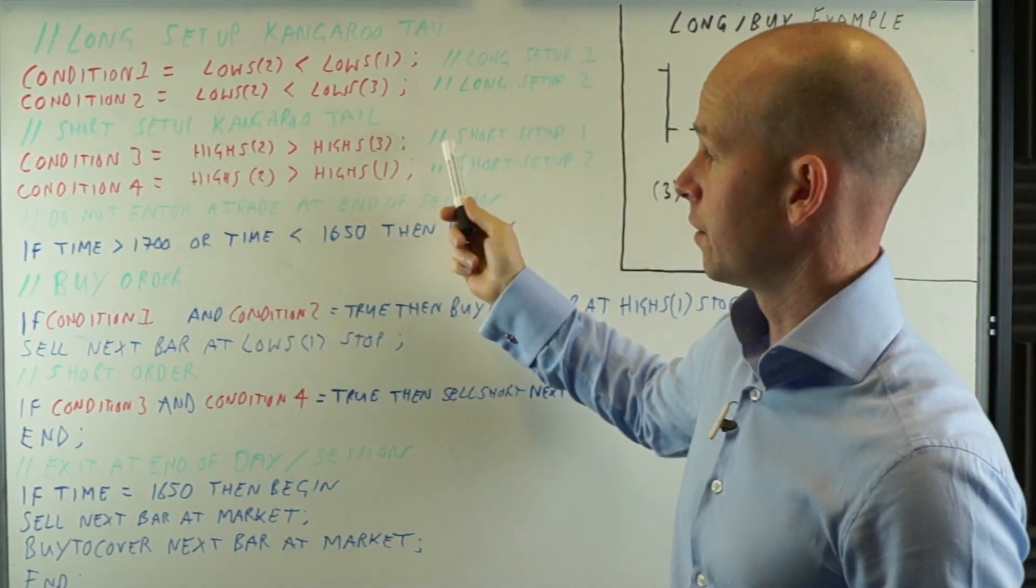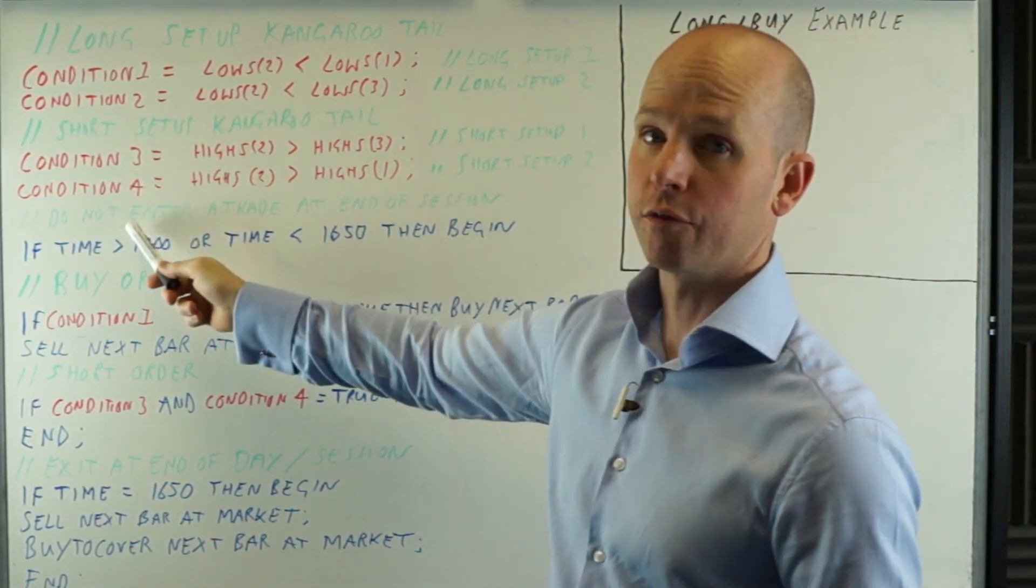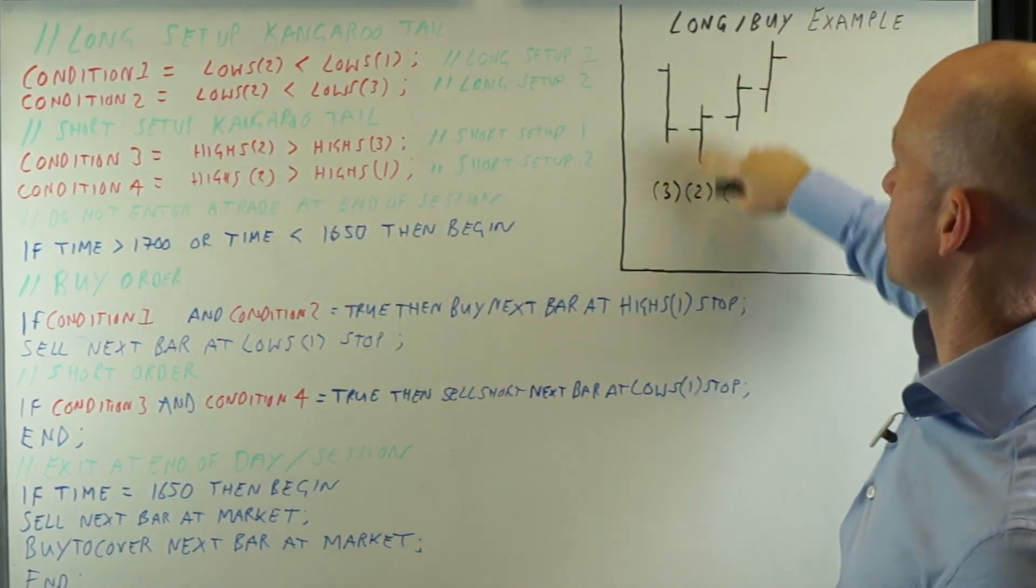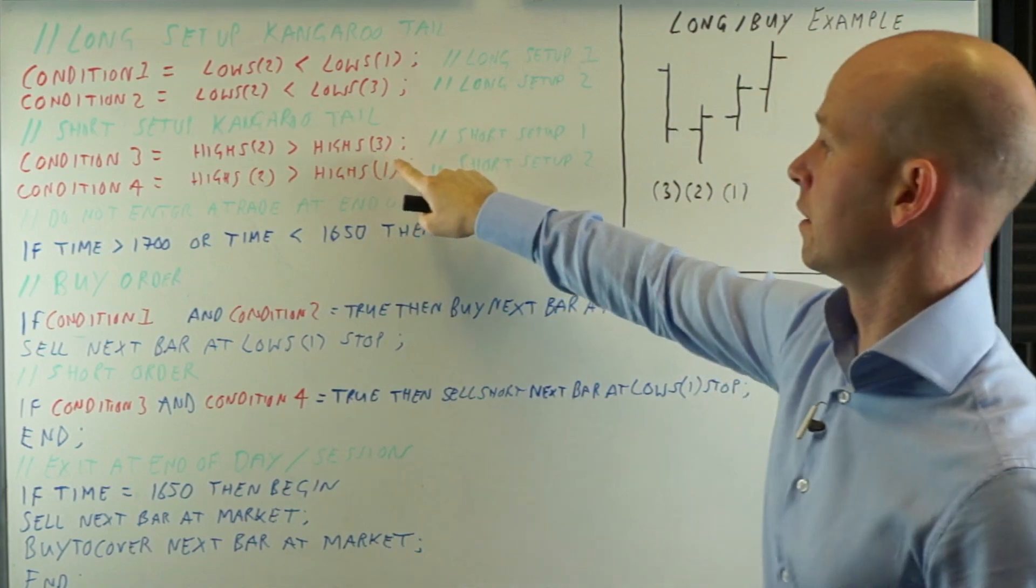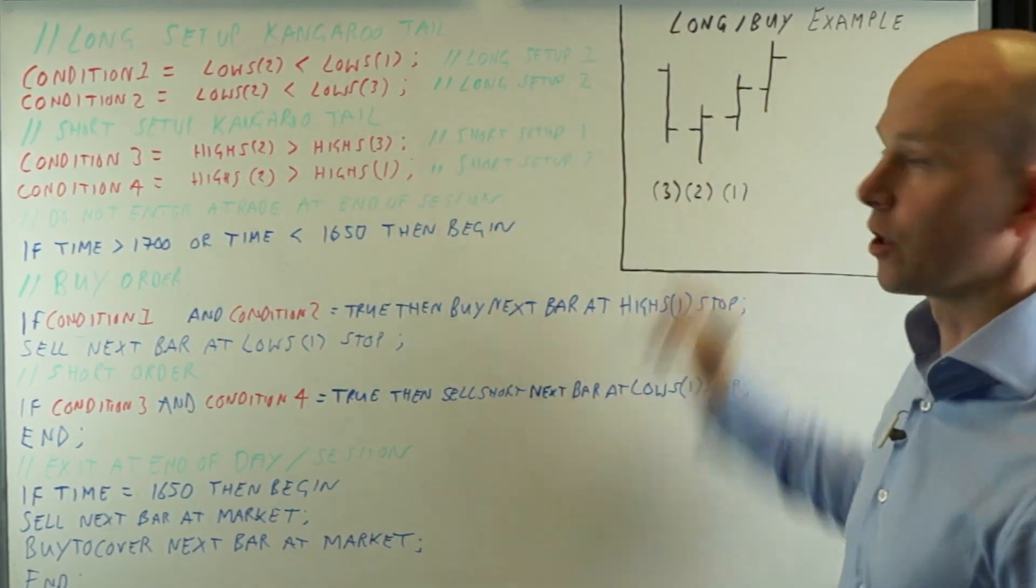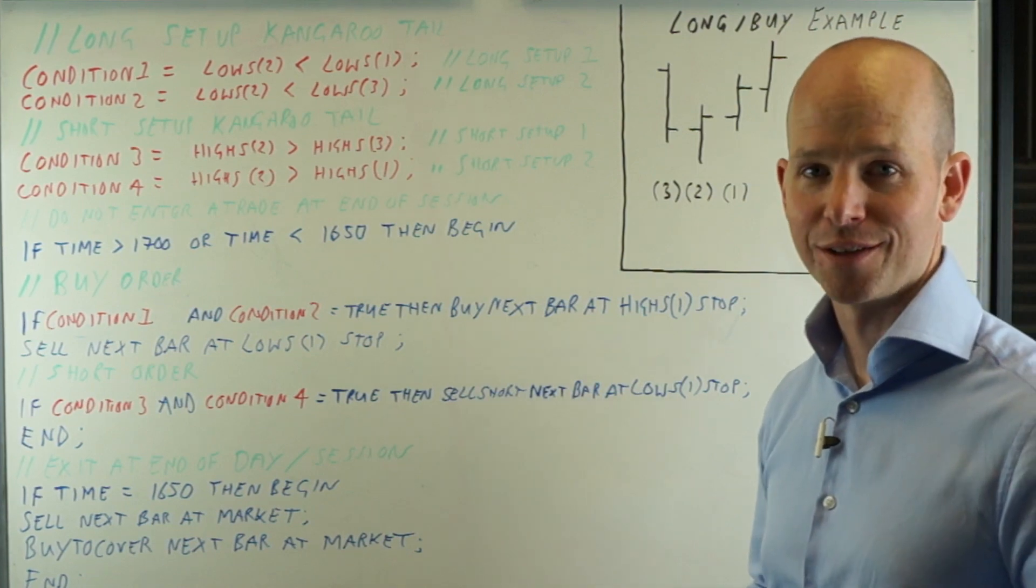Short setup, kangaroo tail. Condition three and four. It's the opposite. So the highS2, so the high of this bar here, has to be greater than the high of bar three and bar one. I haven't showed it in the diagram, but you get the idea.